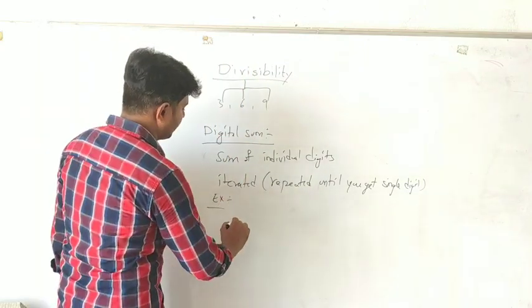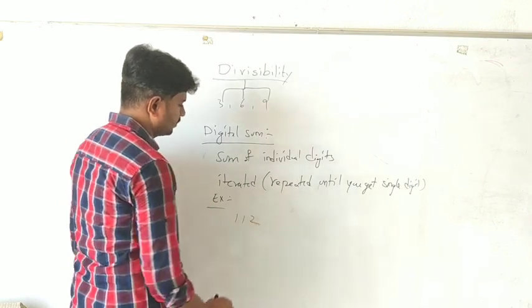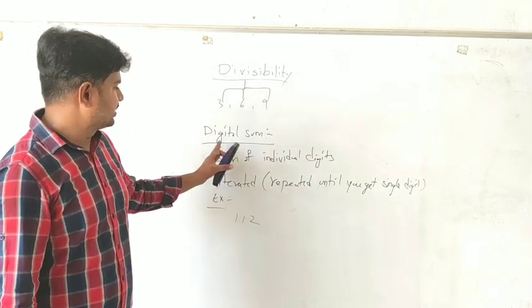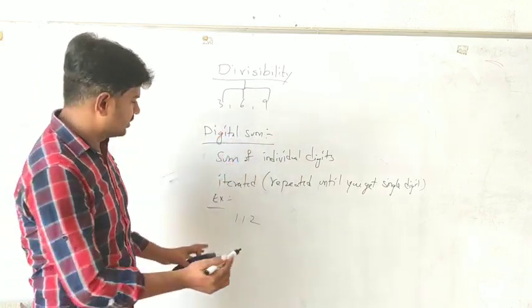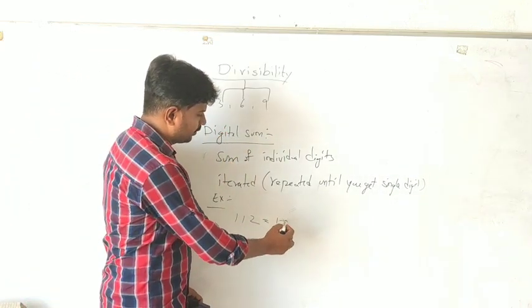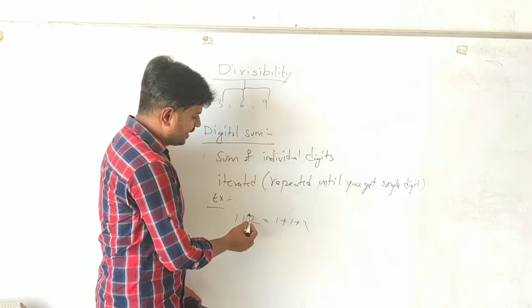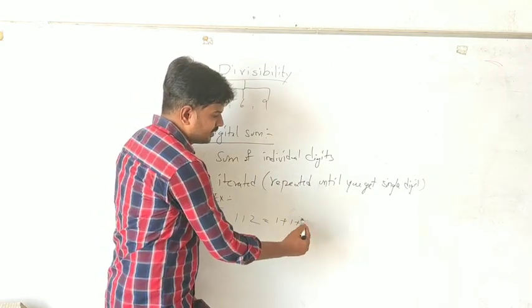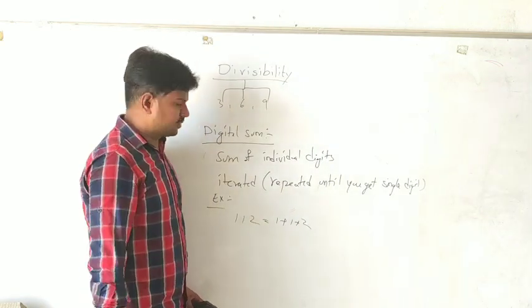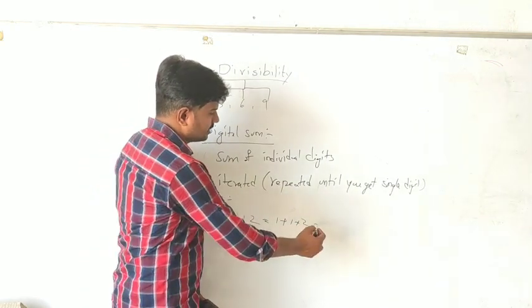What is this digital sum? If you have a number like 112, the digital sum for this, assume digital as a single digit sum. What is it? It equals 1 plus 1 plus 2. If you add it individually and you get a single digit, then it is called Digital Sum. What is the answer? 1 plus 1 plus 2 is 4.